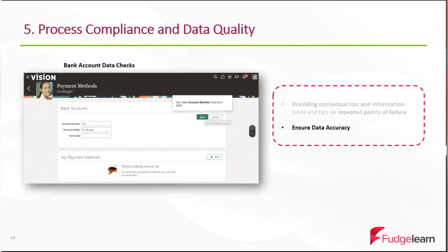OGL can be used to ensure data accuracy by applying certain checks on data input. For example, you can ensure that a field is populated with a numeric value of eight characters, like the example here in the screenshot. You also have the option to disable further fields or buttons on that page until the user enters data that satisfies the requirements.